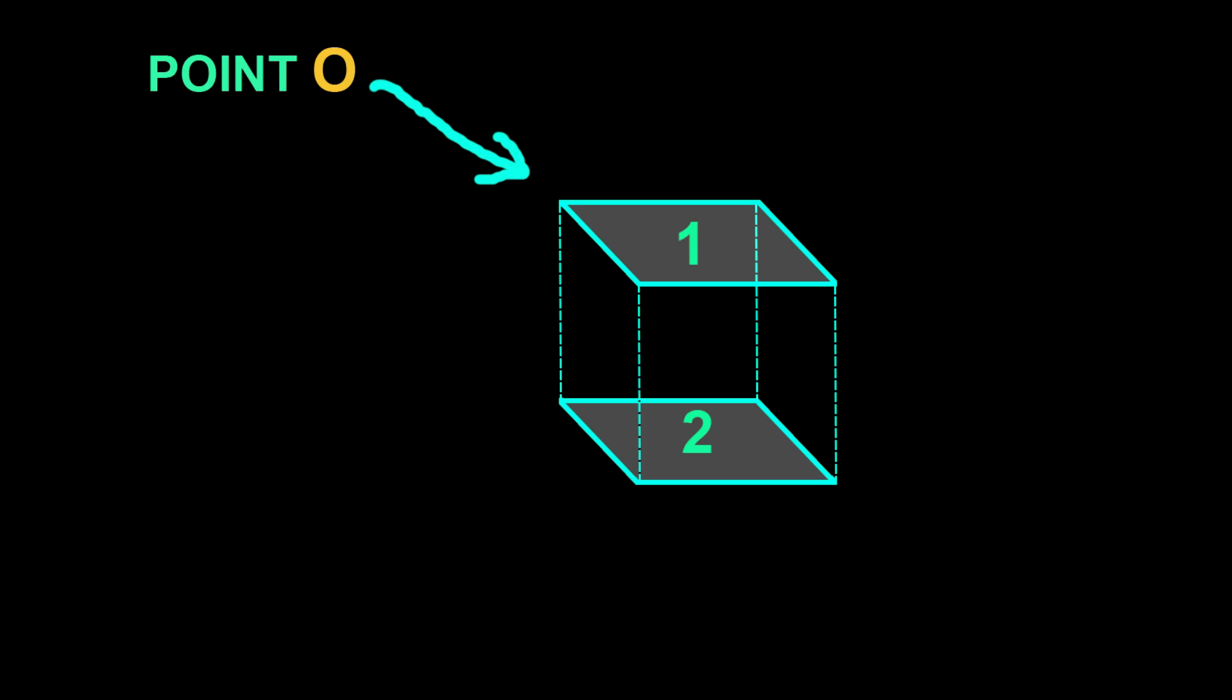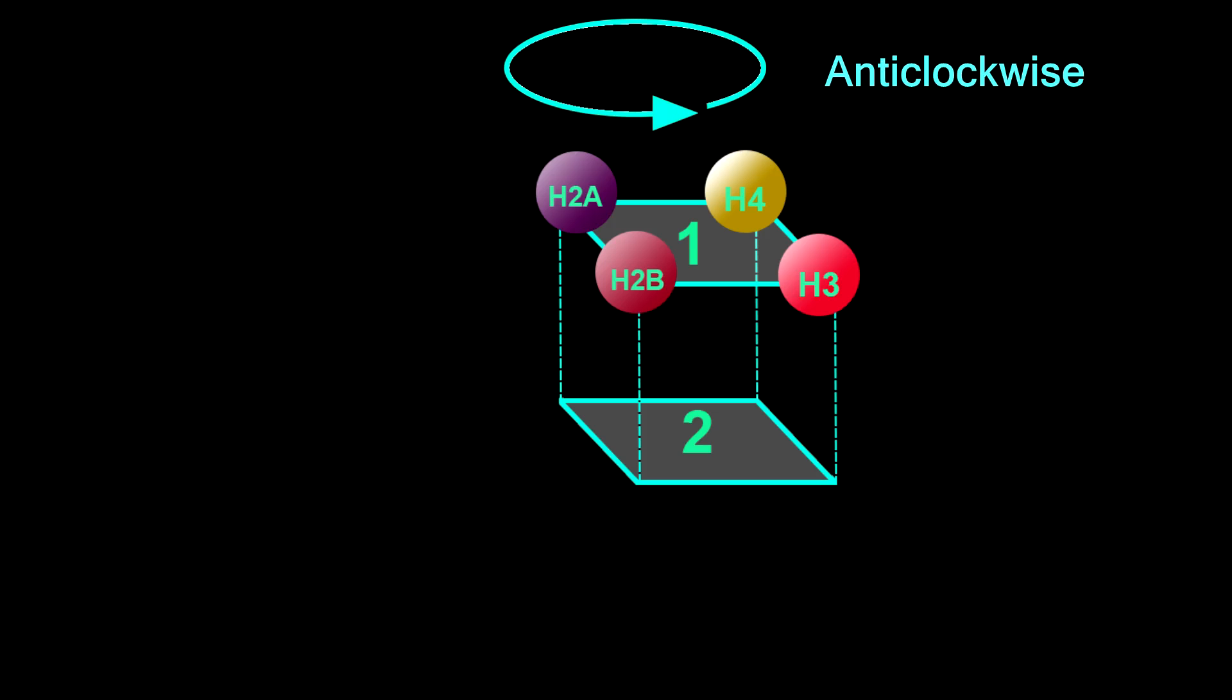In number 1 plane, from point O, I arrange four histone proteins in an anti-clockwise manner, one by one: H2A, H2B, H3, and H4.